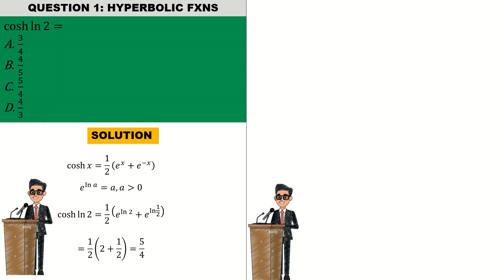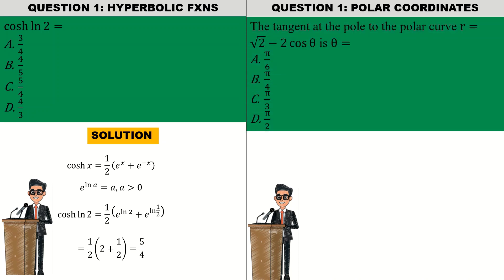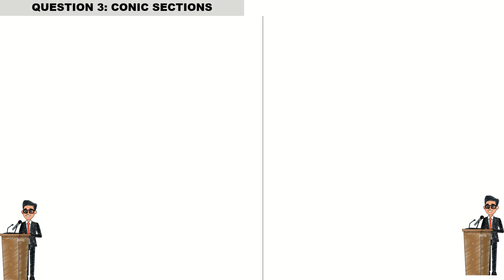Question number two was on polar coordinates. The equation reads: the tangent at the pole to the curve r equal to root 2 minus 2 cos theta is theta equal to. For the solution, simply at the poles r is equal to zero. It therefore means that cosine of theta is equal to root 2 on 2. From there we can find theta which is cos inverse of root 2 on 2. You get theta to be equal to pi on 4, so the correct answer is option B.